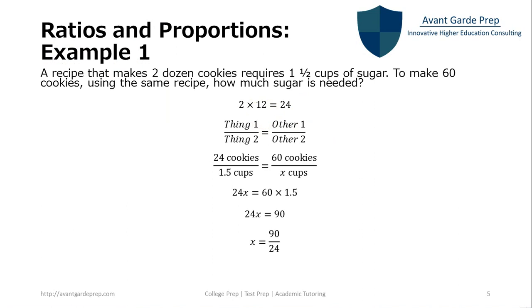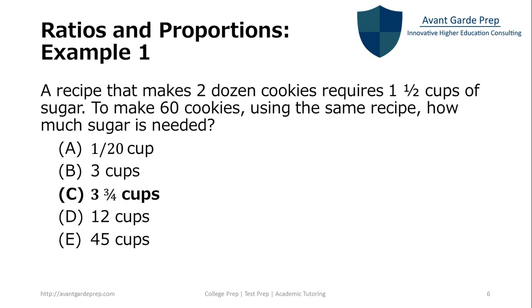And so you can see here, three point seven five. And three point seven five is the same as three and three quarters. Going back to our original problem, we can see that answer choice C is three and three quarters. So if we wanted to make sixty cookies with the same recipe, we would need three and three quarter cups of sugar.